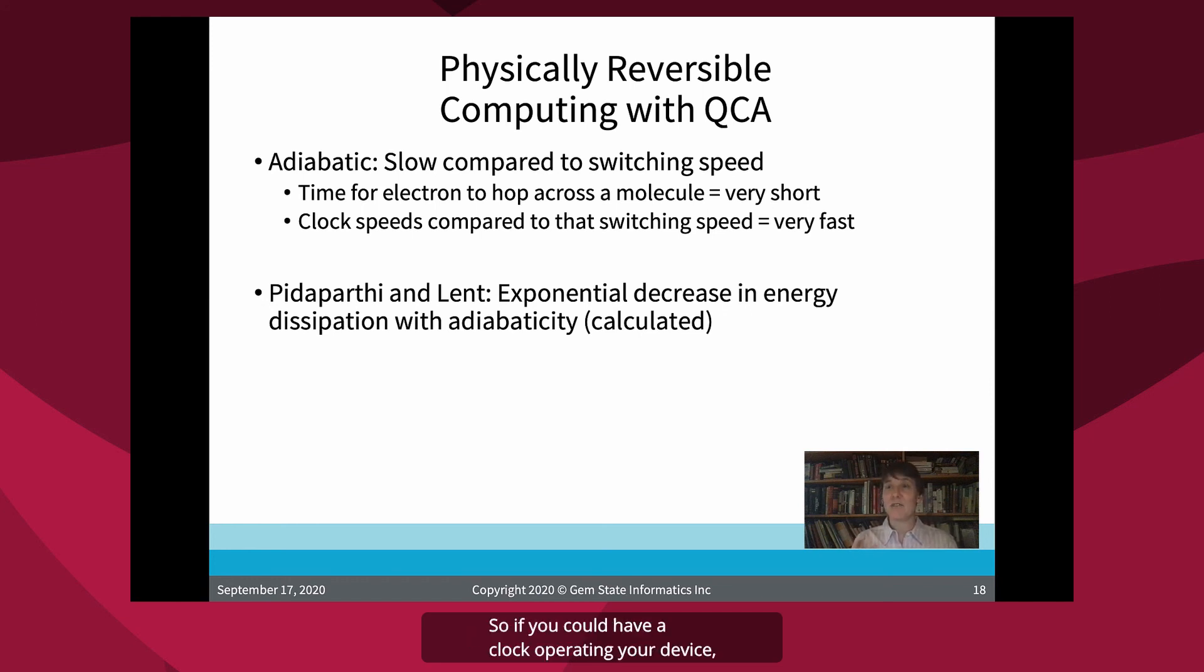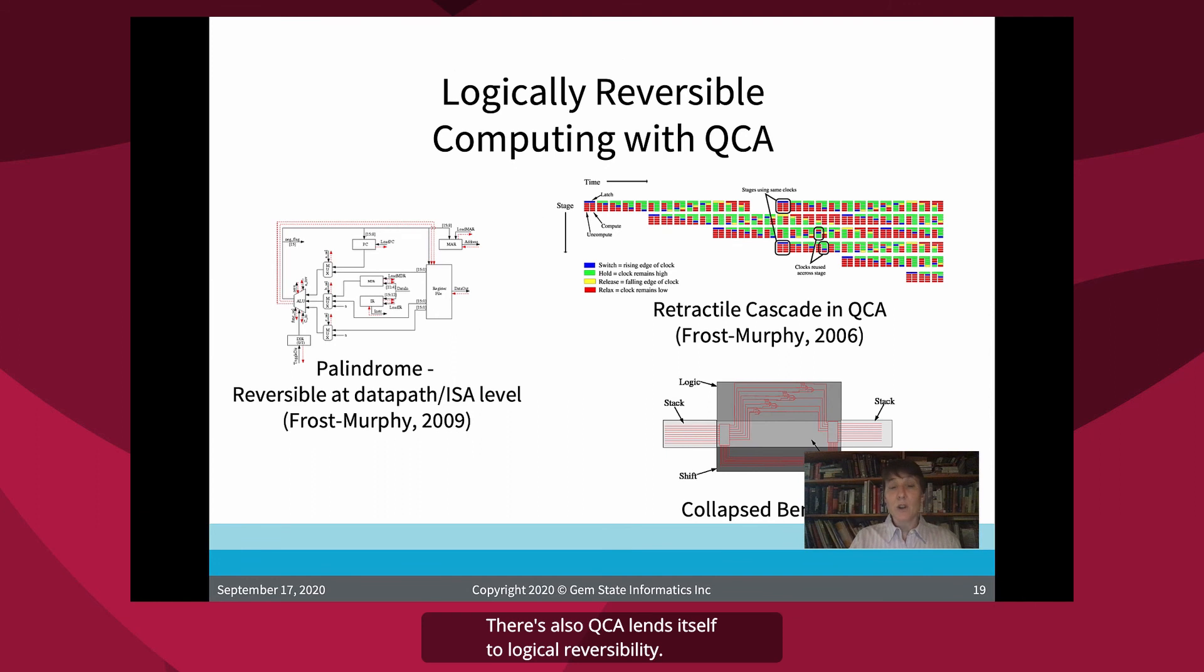That's sort of, so if you could have a clock operating your device operating in the tens of terahertz, that's still slow compared to the time it takes that electron to hop across. So there is a massive amount of potential there. Another thing is recently, Pittaparthi and Lent had, calculated that there's actually an exponential decrease in energy dissipation in the adiabaticity of QCA. So that's a very, that's also a very exciting result.